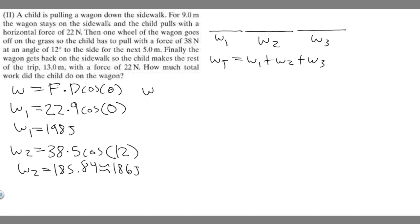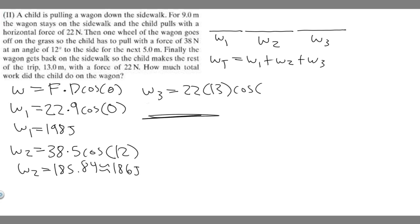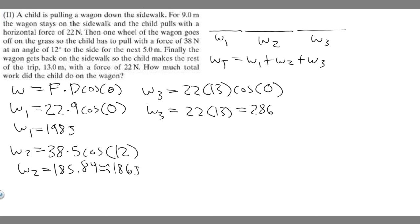Now for W₃: they get back on the sidewalk and make the rest of the trip, which is 13 meters with a force of 22 newtons. Since they're on the sidewalk again it's straight, so the angle is 0. It's just 22 times 13, which equals 286 joules.